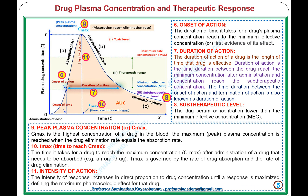Drug Plasma Concentration and Therapeutic Response. 6. Onset of Action: the duration of time it takes for a drug's plasma concentration to reach the minimum effective concentration, or first evidence of its effect. 7. Duration of Action: the length of time that a drug is effective. Duration of action is the time between the drug reaching the minimum concentration after administration and the concentration reaching the sub-therapeutic concentration.